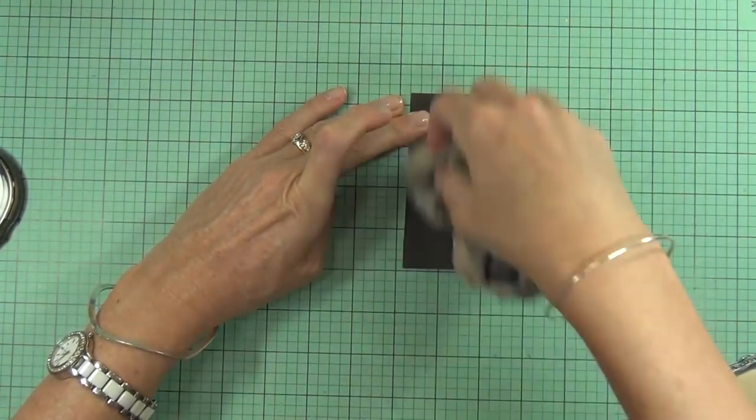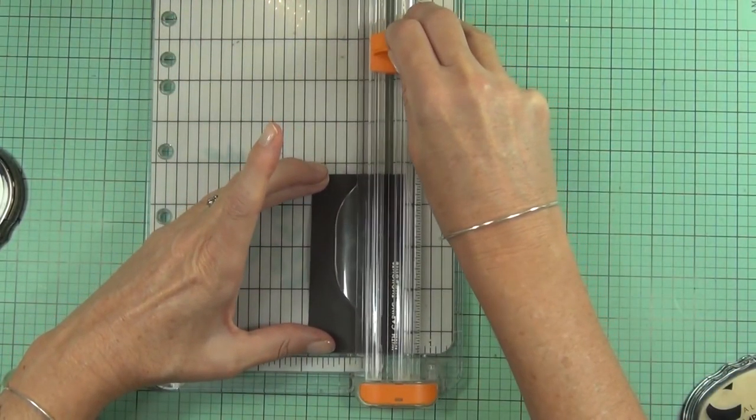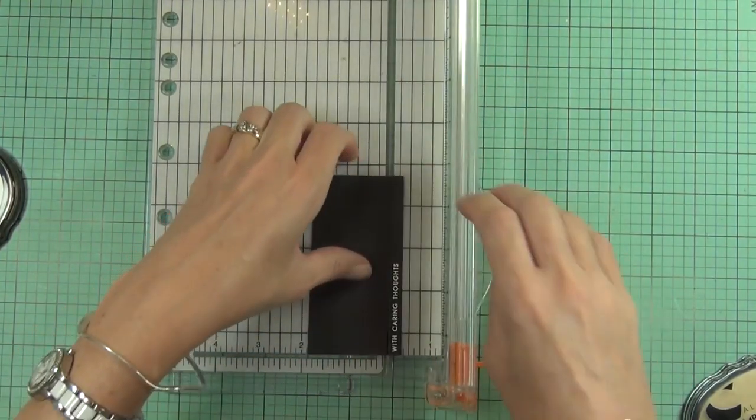And then once that sort of cooled down a little bit, I just wipe away the powder tool—the residue there. It certainly does help with those stray bits of embossing powder though; it saves a lot of after work.